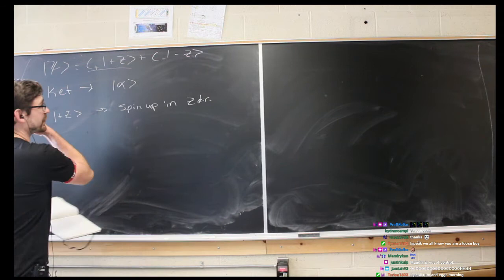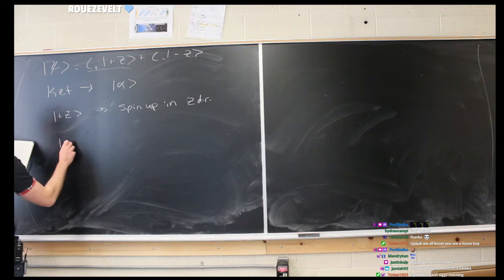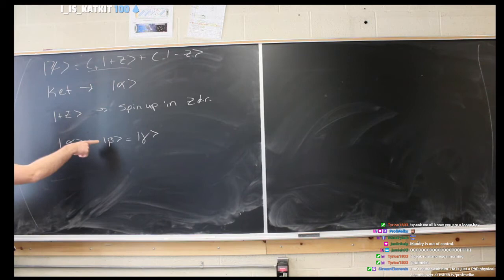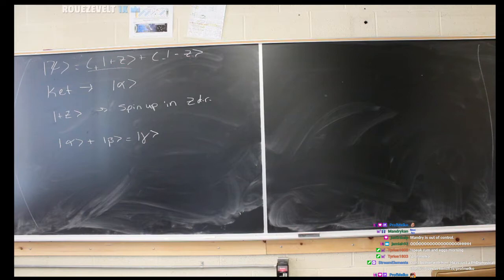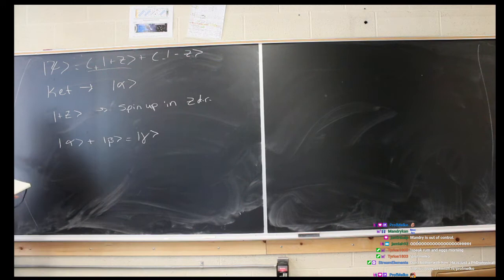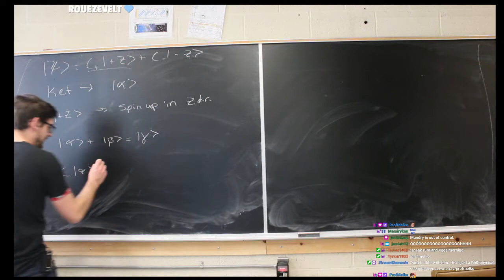You can add states together — that's perfectly normal. Instead of adding the z states, let's speak more generically: we have some alpha state plus some beta state, and that equals some gamma state. States can be added to create new states. This state describes both spin-up and spin-down in the z-direction. We can also multiply states by numbers — complex numbers or otherwise — so a complex number c multiplied by a state can be moved around and written in different ways.